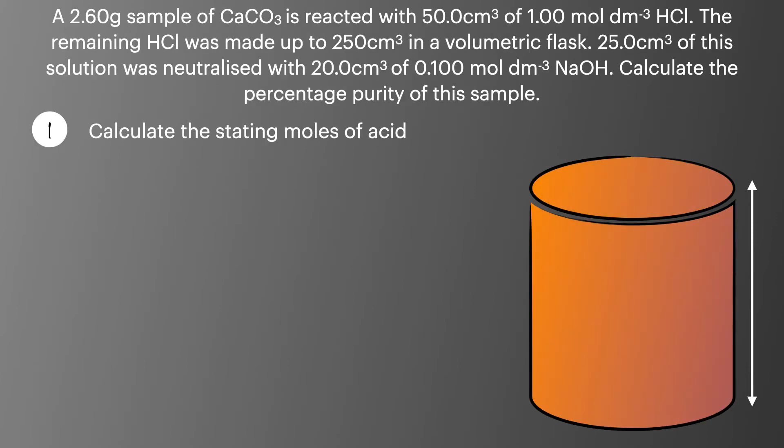Breaking that down, first we're going to calculate the starting moles of the acid. To do this we use the equation number of moles equals volume times concentration. We've got 50 cm³ of 1 mol dm⁻³ hydrochloric acid and that gives us 0.05 moles.